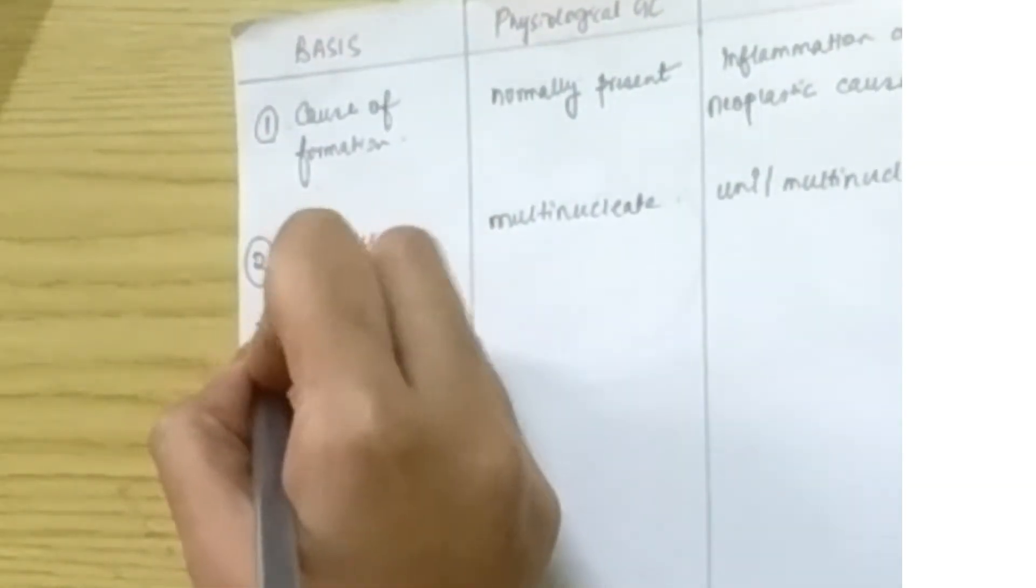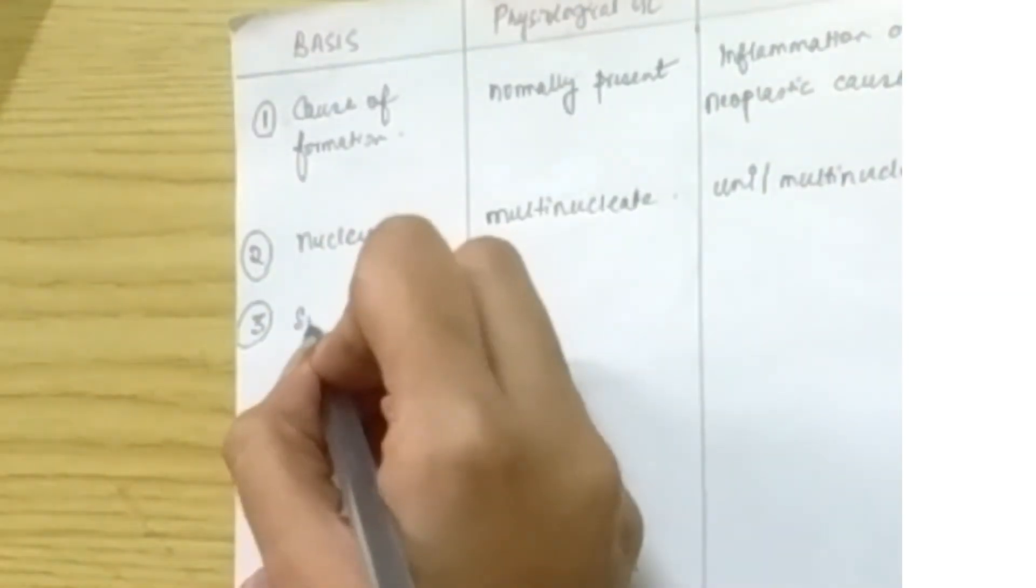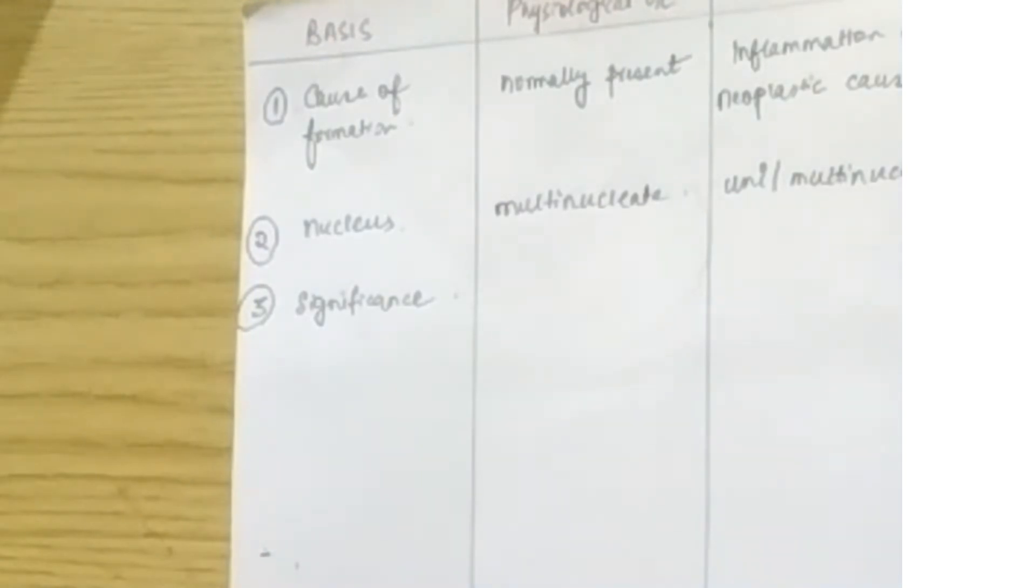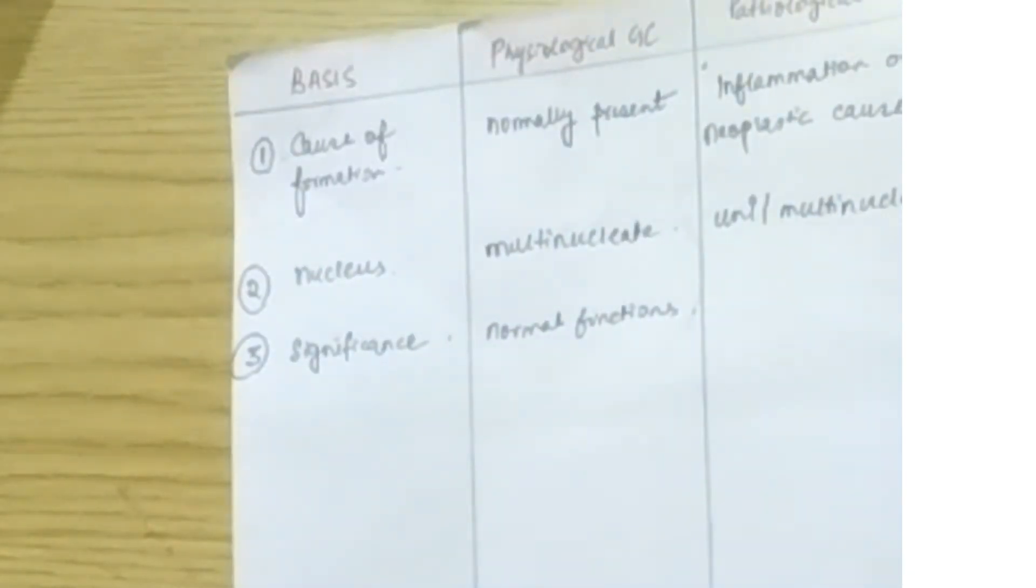Okay, now come to what is the role in their body. What will they tell us? Physiological giant cells have normal roles in the body. As they are present, they will have some function. For example, the Kupffer cells in your liver will act as the macrophages of liver. Then there are osteoclasts, which are the bone destroying cells.